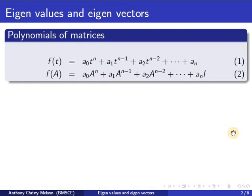The constant term An is replaced by An into I, where I is the identity matrix which is the same size as matrix A.